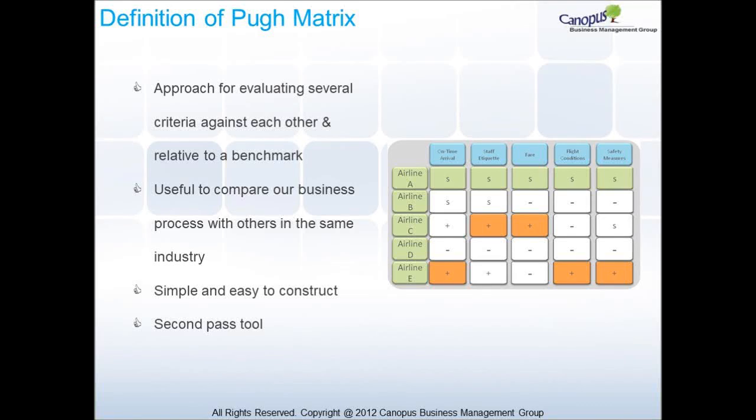Pumatrix is an approach for evaluating several criteria against each other and relative to a benchmark. It is useful to compare our business process with others in the same industry. Also, it is simple and easy to construct. This is an example of a second pass tool.